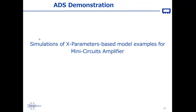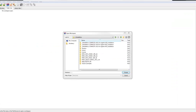So now we are ready to turn our attention to some simulation examples. To do this, we will use the Mini-Circuits PHA1 Plus model as an example. After starting Agilent ADS, I am running ADS version 2012 here today.